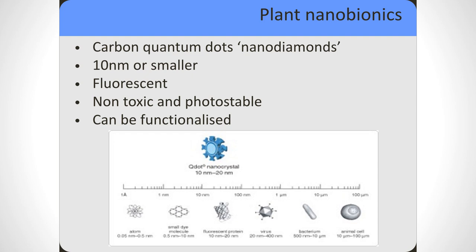Carbon quantum dots have no cadmium, no cadmium leaching, which is a distinct advantage. They are around 10 nanometers in size and are inherently fluorescent — their structure means they are fluorescent. Because they are basically made of burnt sugar, they are non-toxic and photo stable. You can put them under continuous light for months at a time and they remain fluorescent without degrading. Like quantum dots, they can also be functionalised — you can attach other molecules around the outside linked to the fluorescent core, allowing you to track where they go.